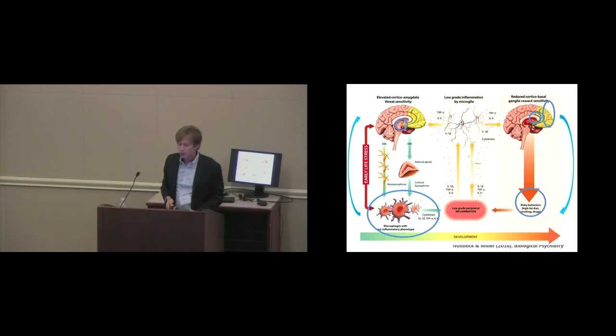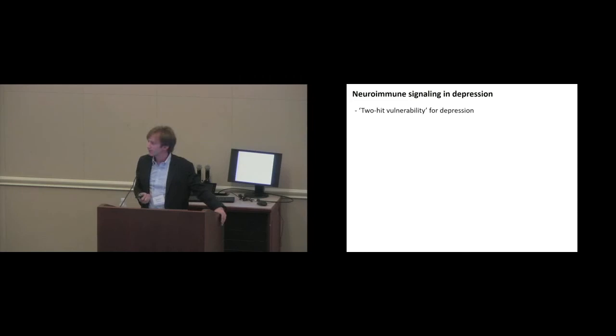So we suggest that a neuroimmune dysregulation might reflect a two-hit vulnerability for, in this case, depression, but we're also suggesting the risk of cardiometabolic illness and atherosclerosis and other types of things, and that the combination of dysregulated brain plus dysregulated immune system may reflect a two-hit vulnerability that also may lead to novel neuroimmune interventions.